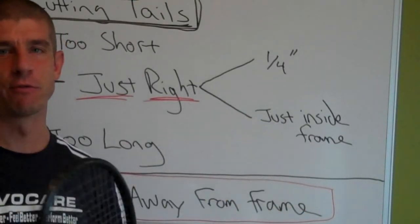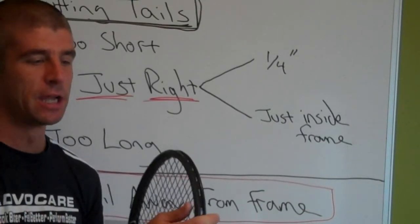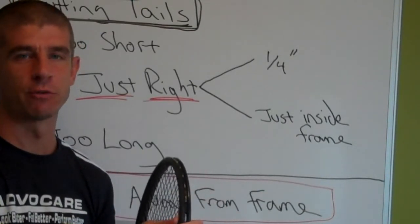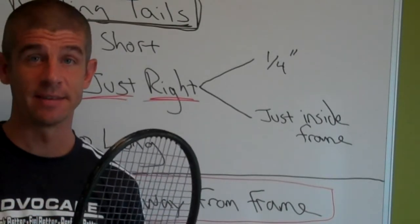The tail should be just inside the frame. And you can't see it here. I'm not going to try to get close enough to show you. But you know what I mean. Just right inside the frame, the edge of the frame is a perfect place in my opinion to cut the tails.